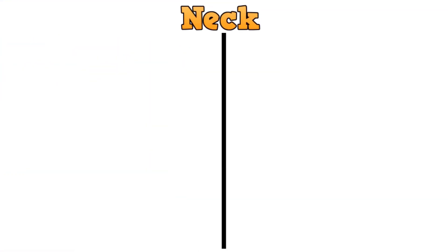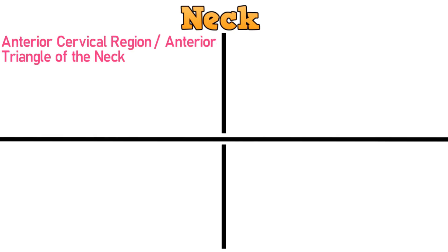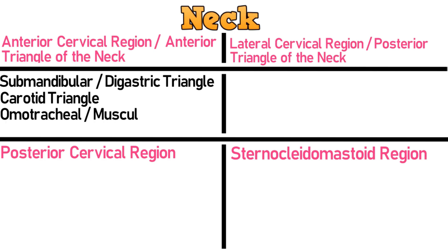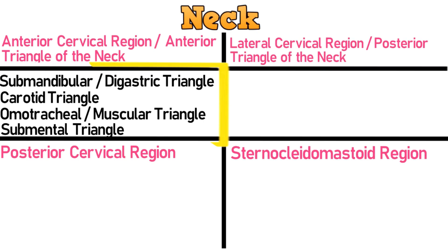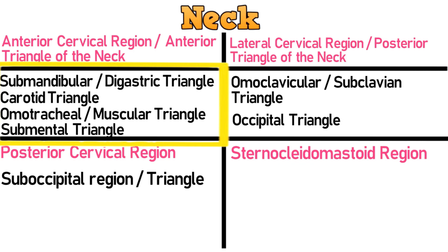The neck is divided into 4 regions, to which some sub-regions or triangles belong. The regions include the anterior cervical region, posterior cervical region, lateral cervical region, and the region of the sternocleidomastoid. The anterior cervical region or the anterior triangle of the neck has 4 sub-triangles: the submandibular or digastric triangle, carotid triangle, omotracheal or muscular triangle, and the submental triangle. We will discuss each of these triangles separately. But before that, let's have a look at the anterior cervical region.